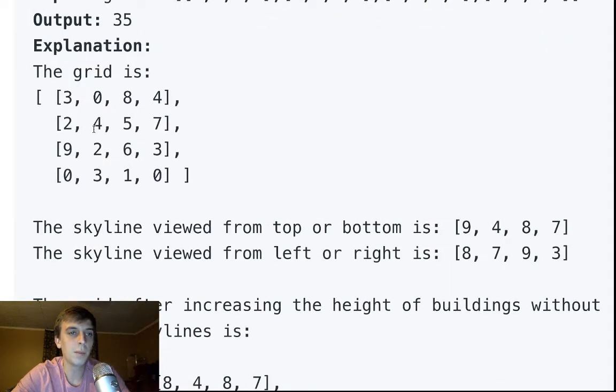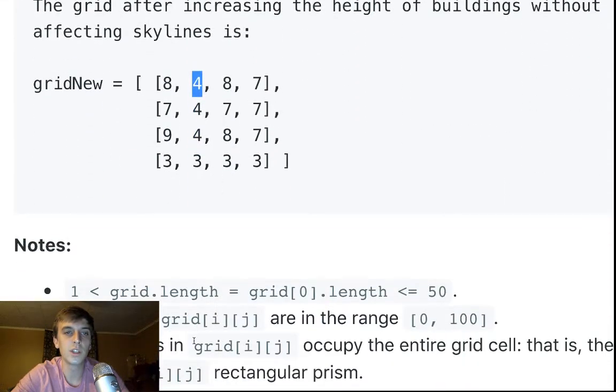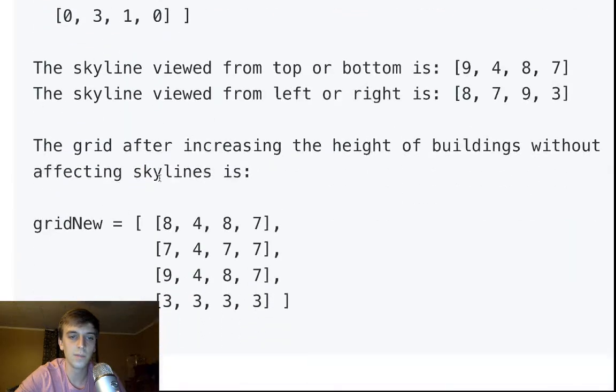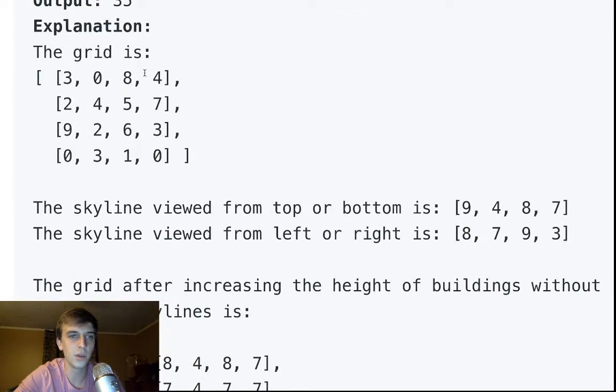So for example, 0, the minimum of 4 and 8, because 4 is the max column and 8 is the max row, is 4. So we do 4 minus the current element which is 0, and then we get the answer which is 4. We subtract the current element just to get how much we would increase it by, if that makes sense. Like for example, 7 is the max column value and 8 is the max row value, so we can only go to 7. So we would be increasing by 3. So we just take the minimum of these values, 7, we subtract 4, and that gives us what we would have increased it by, 3.